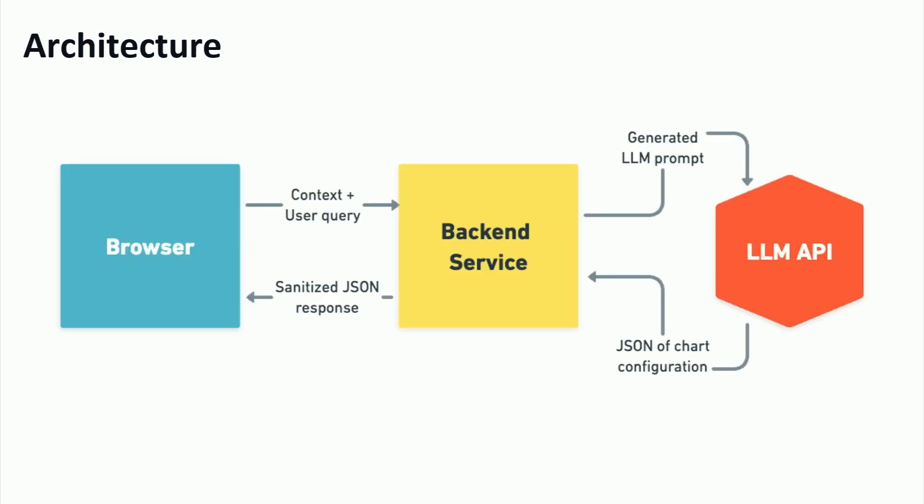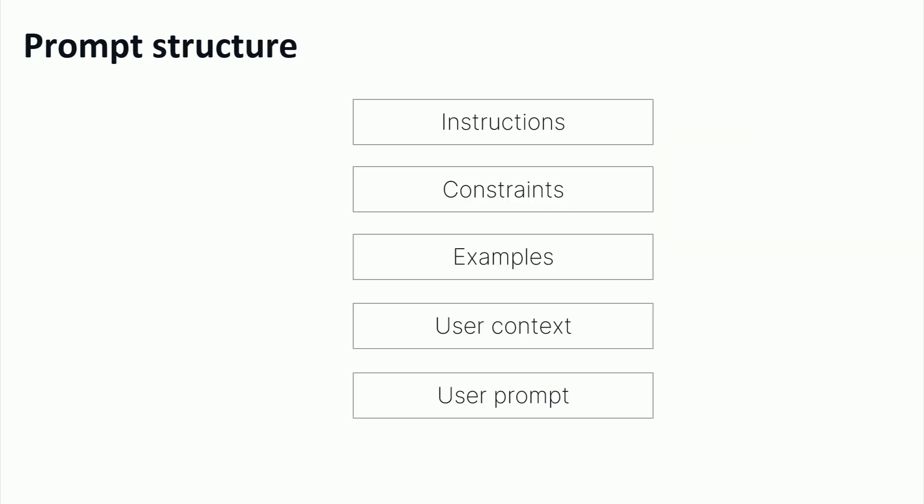In the architecture, we tried to keep things as simple as we possibly could and still have it work. So we took our existing backend service, allowed it to take in the context of the user and the prompt, we would generate a prompt for the LLM, pass it through, and return back the JSON to the frontend. The prompt structure was not too complicated — probably similar to a lot of other prompts you've seen before. We're going to tell the LLM what it's going to do, give it some constraints, a few examples, no pre-training yet, show the user's context, and finally what the user's looking for.